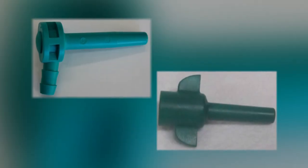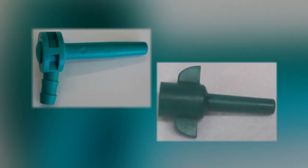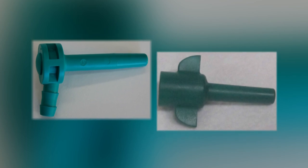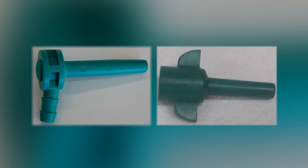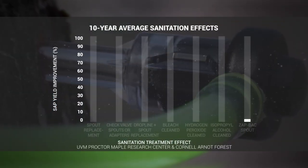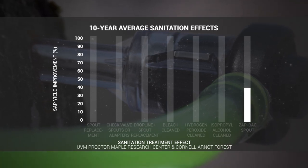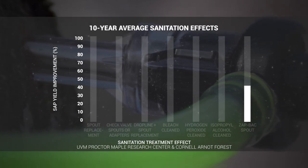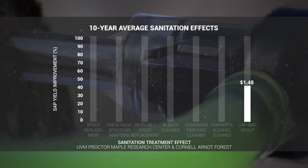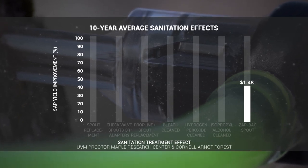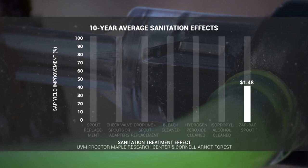Zap-back spouts or adapters use antimicrobial silver embedded in the spout to reduce microbes. These spouts are used on a 3-year rotation — new spouts are placed in a taphole the first year and reused for the next two seasons before being replaced. Although more research is needed, early indications are that zap-backs improve sap yield by about 42% across the 3-year lifespan, with a net profit of $1.48 per tap. Zap-back spouts are not approved for certified organic maple production and may result in a loss of certification.